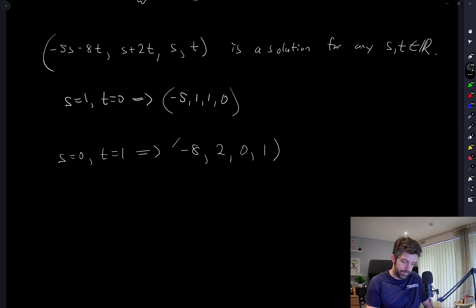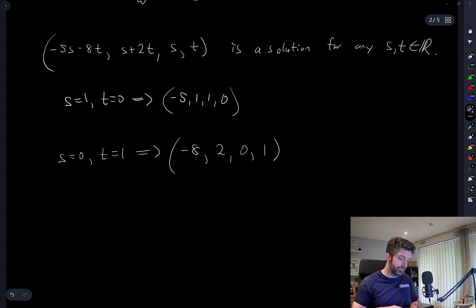0, 1. This is a solution, you could check very easily that this is a solution by substituting these numbers into the system of equations, but this is clearly not a multiple of that vector.